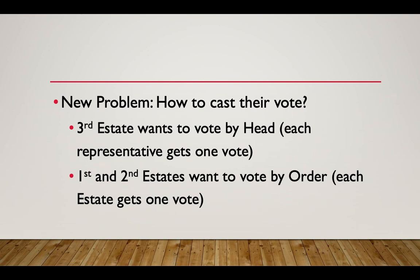Now there's another problem: how are they going to vote? The third estate says they need to vote by head — each representative receives one vote. The first two estates say they need to continue to vote by order — each estate gets one vote. The third estate argues that voting by order is unfair because the first two estates always vote together, making it two to one against them every time. If Louis were really thinking, he would want them to vote by head, because then the third estate would definitely tax the second estate and would only need to sway one vote from the first estate.